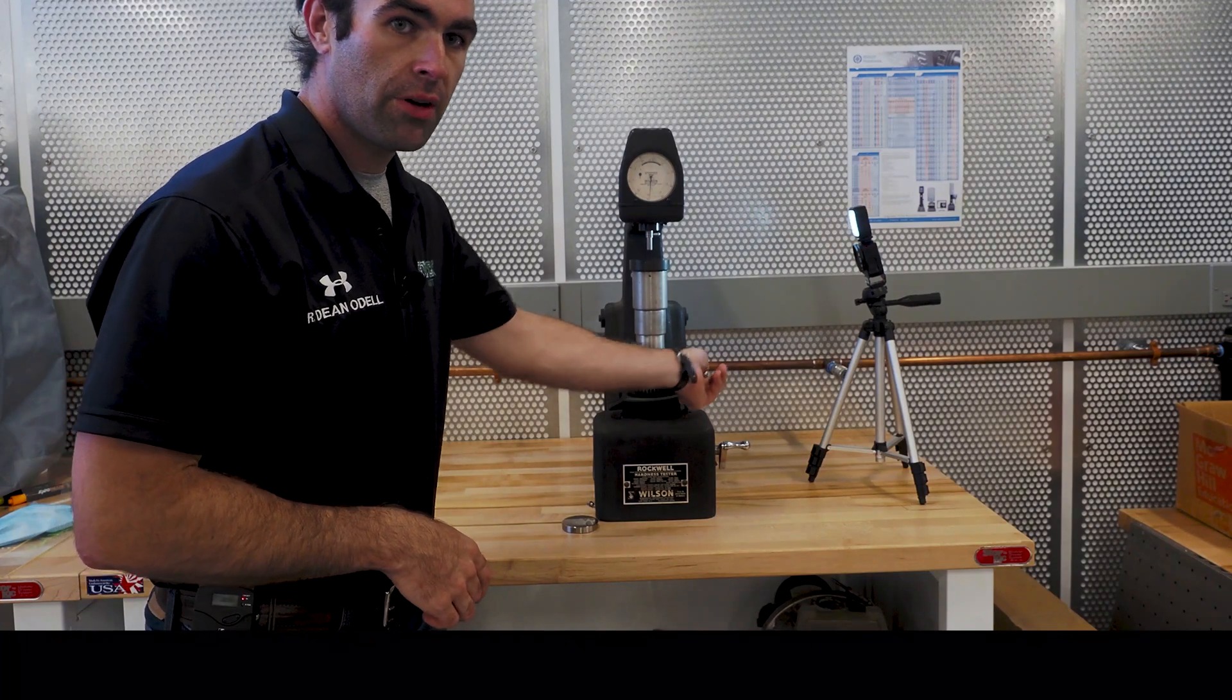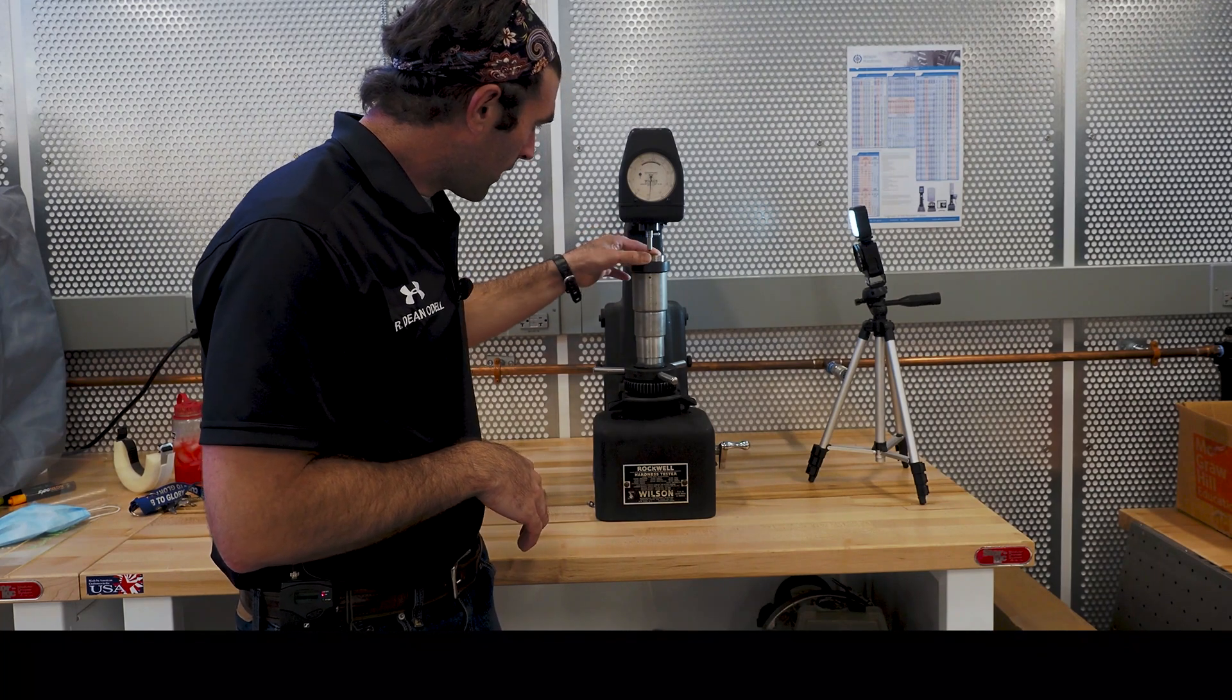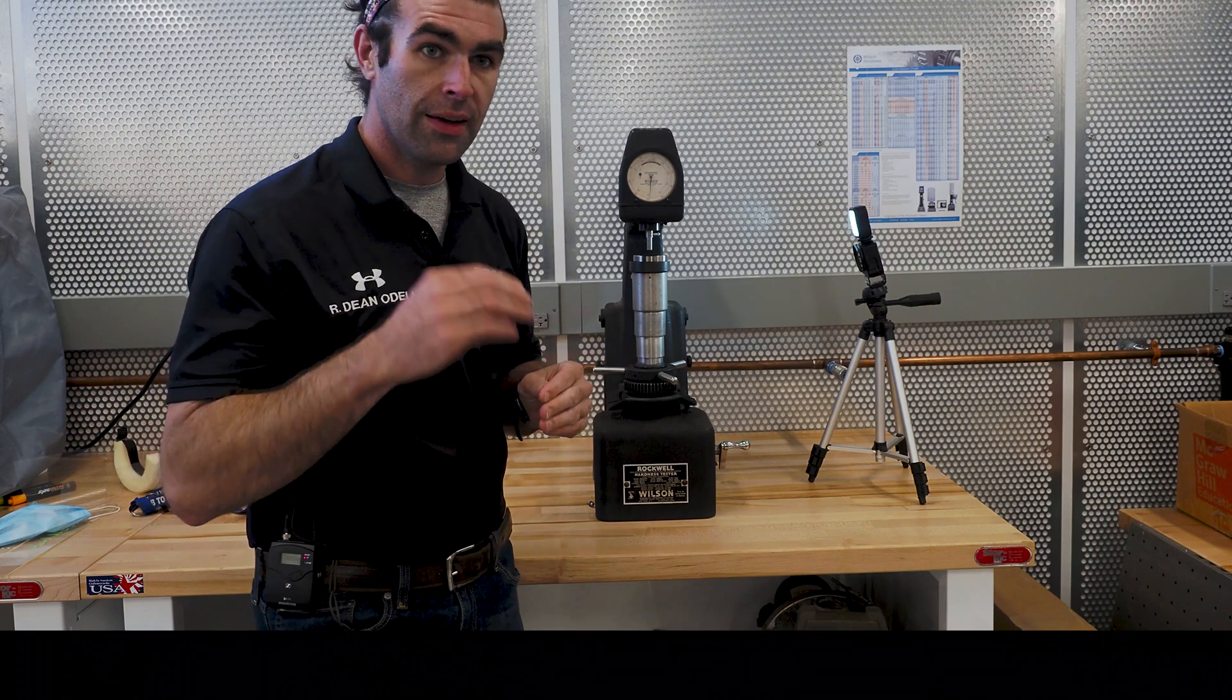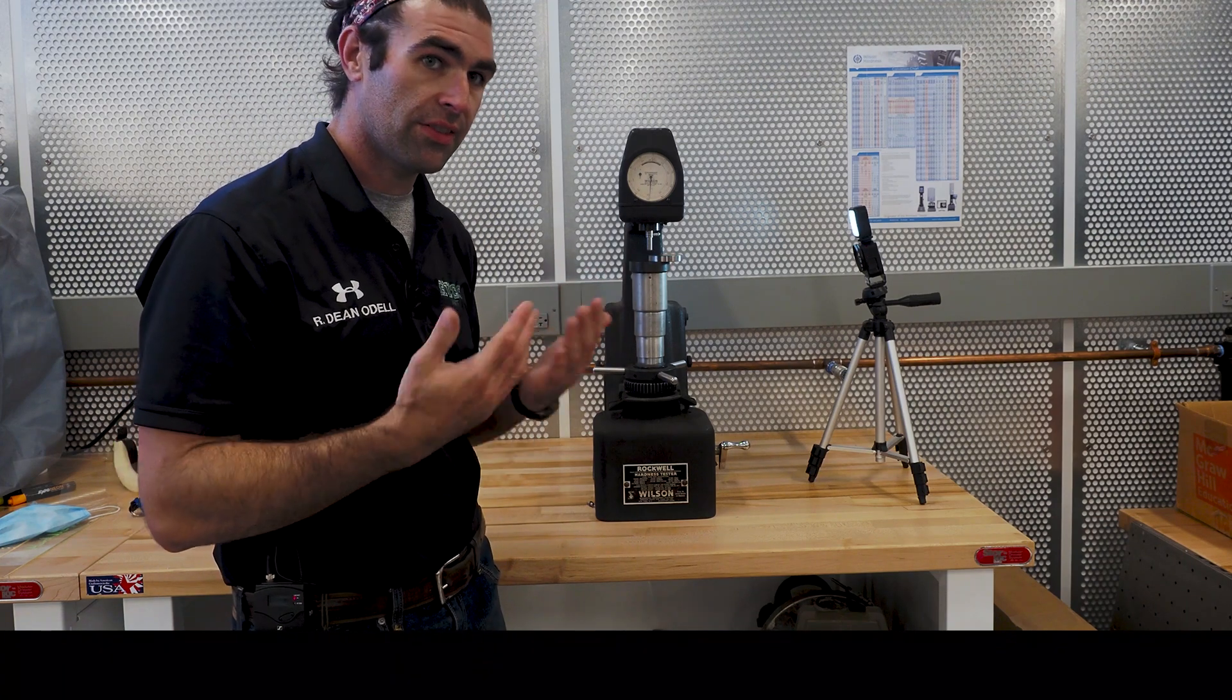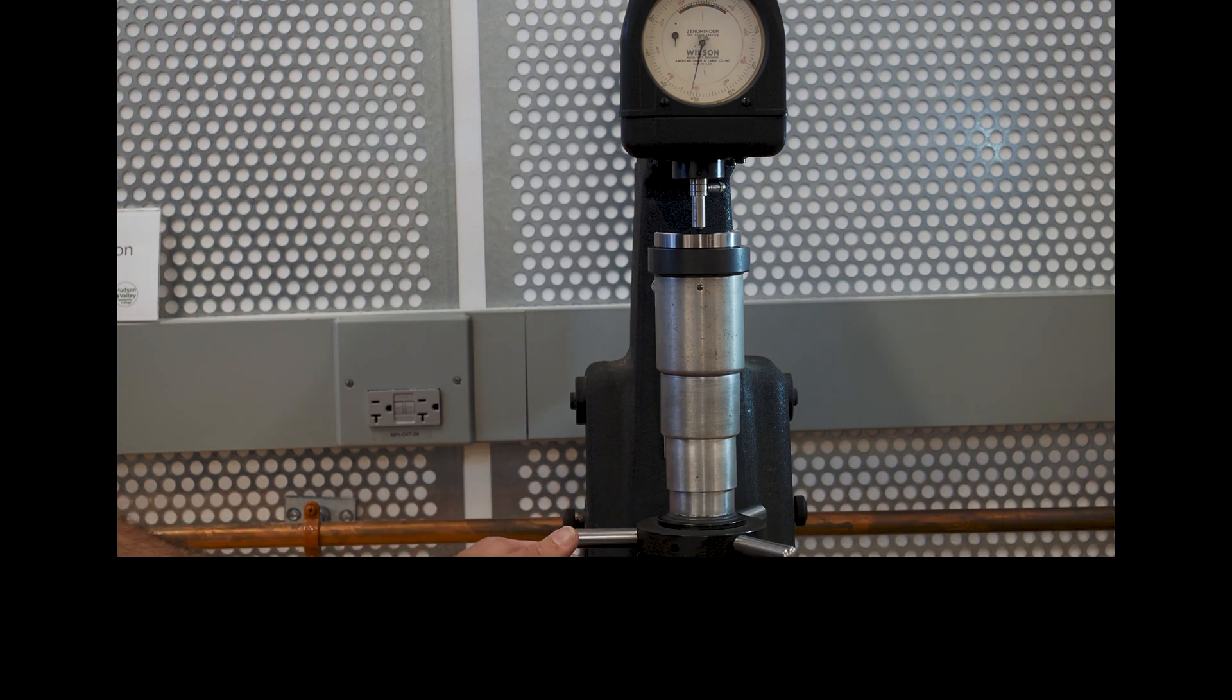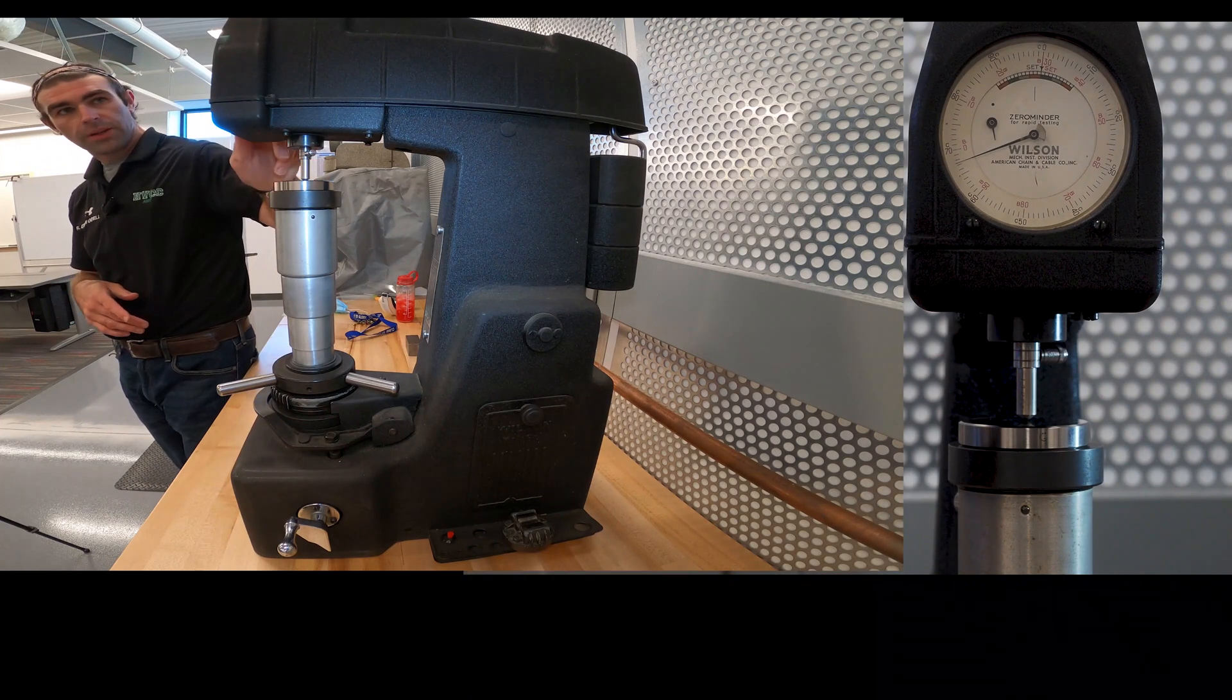This moves the anvil up and down. I want enough clearance to get the workpiece under the indenter without scraping it. I'm going to gently slide this over here. First I'll wipe it off, make sure there's no dirt or debris. Wipe this off, make sure there's no dirt or debris. I'll get it centered for my first test. I wouldn't want to put it all the way over here to test the first one if I don't have to. I'm going to slowly move this up until I make contact. When I see that needle move, I know I've made contact. So now I'm touching the indenter to the workpiece and my needle started to move.